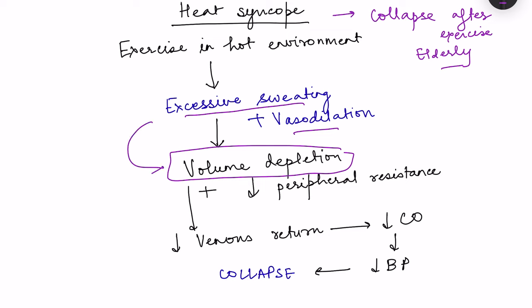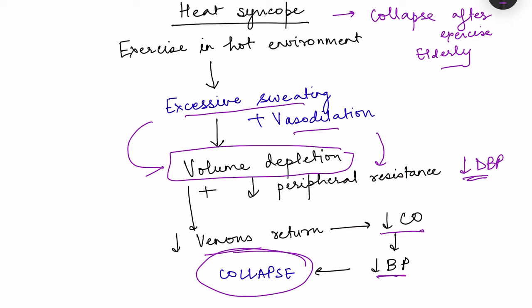Excessive sweating causes volume depletion, and due to vasodilation there is a decrease in peripheral resistance. Since peripheral resistance is the main determinant of diastolic blood pressure, diastolic blood pressure decreases. Volume depletion also decreases venous return and hence cardiac output, causing a decrease in systolic blood pressure as well. So the person collapses after exercise mainly due to excessive sweating — that is heat syncope.